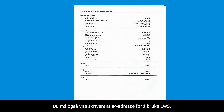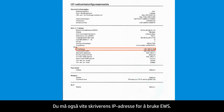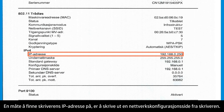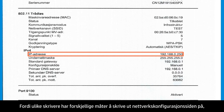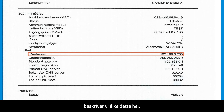You must also know your printer's IP address to access the EWS. One way to find your printer's IP address is to print out a network configuration page from your printer. Because printing a network configuration page is unique for each printer, we will not provide those instructions here.